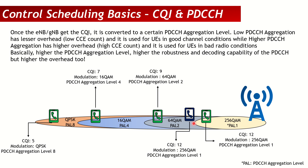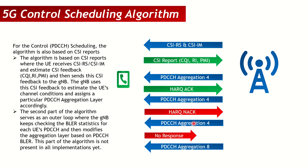Looking at the same diagram from the data scheduling discussion: the gNodeB sends CSI-RS and CSI-IM, and the UE sends back a CSI report carrying CQI, rank indicator, and PMI. Based on the CQI, the gNodeB allocates an MCS — for example 16 QAM — and a PDCCH aggregation level, for instance aggregation level 4.